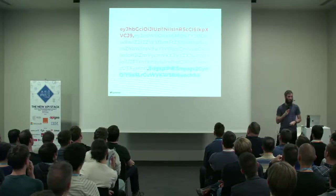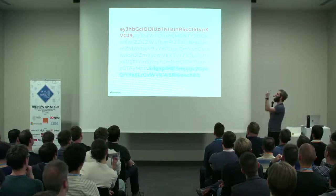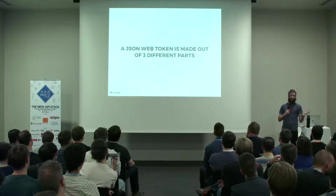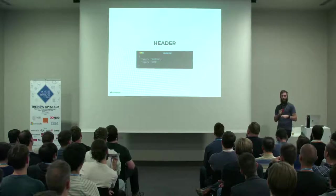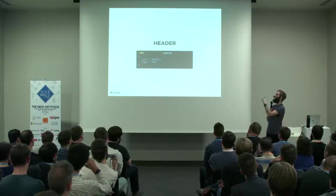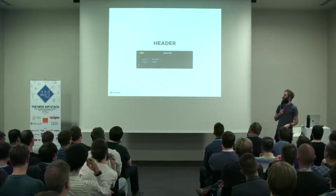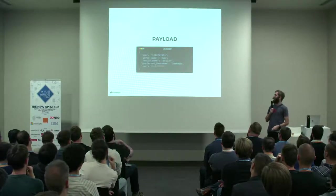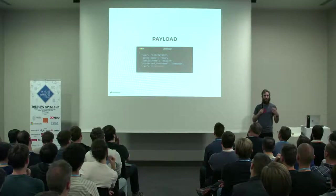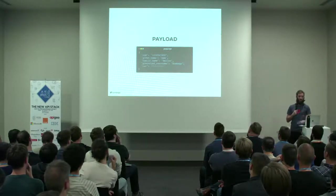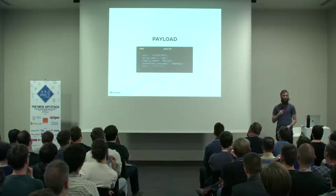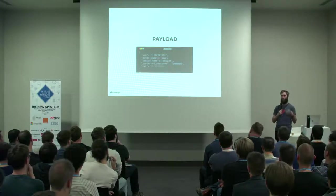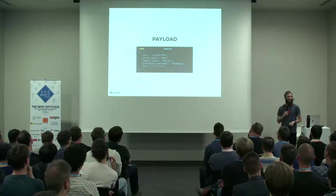A JSON Web Token looks a bit like this. It's important to notice that there are three parts: the header, the payload, and the signature, shown in different colors and divided by a dot. The header is a base64 string of a JSON object — it tells us which algorithm was used to sign the token and which type of token it is: a JSON Web Token. The second part, the payload, is also a base64 of a JSON object, and it can have anything that's valid JSON inside of it. It says who the subject is — user ID, given name, family name, username — and when it was issued. You can also add an expiry date if you want your tokens to expire at a certain time, which you probably should do.